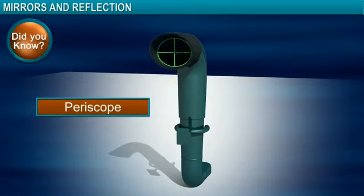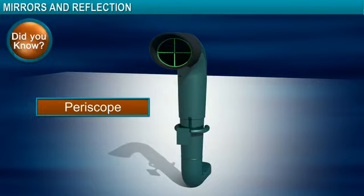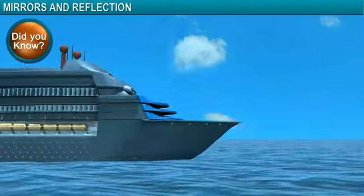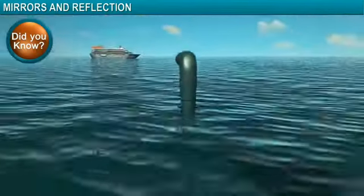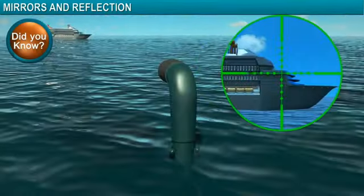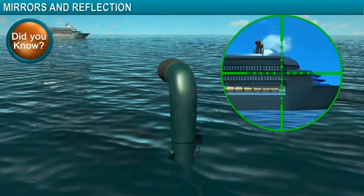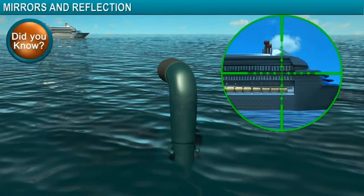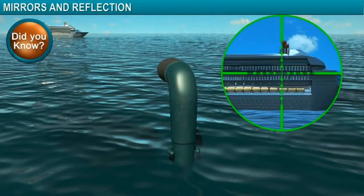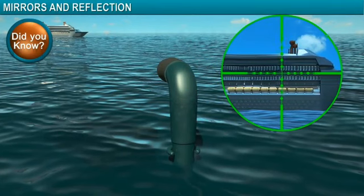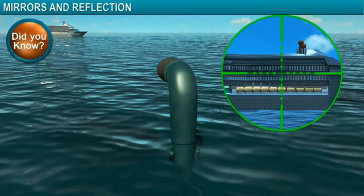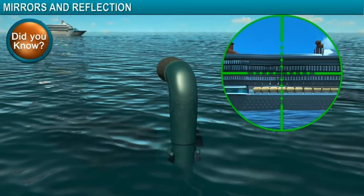Did you know? A periscope is an instrument for observation from a hidden position. It is used in submarines to view objects on the surface above and works on the concept of reflection in plane mirrors.